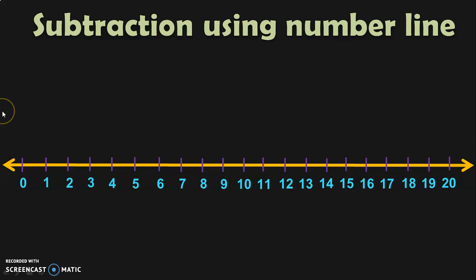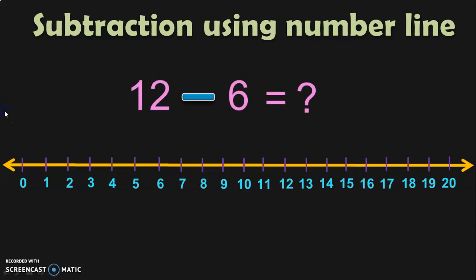The next topic is subtraction using a number line. This is a number line with numbers from 0 to 20. We are going to subtract 12 minus 6. First, locate the number 12 on the number line — number 12 is over here, circle it. Now we have to subtract.